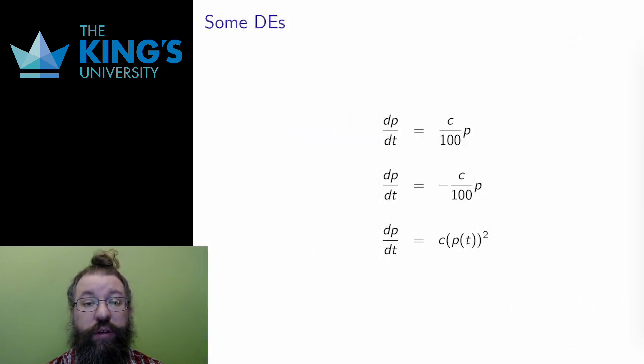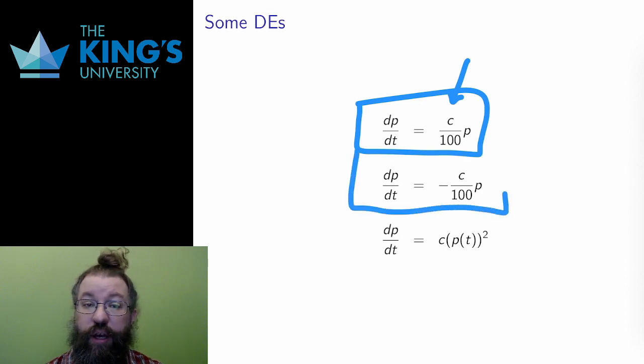Here are a few other differential equations. The first here is percentage growth again, with C being the percentage, hence division by 100. The second is the same, but with a negative sign. The negative on the right means that the growth rate on the left is also negative. This is percentage decay instead of percentage growth. The equation says that the population decays by C% per year, or whatever unit of time is being used. Positive rate of change is growth, and negative rate of change is decay.